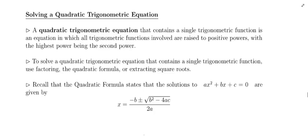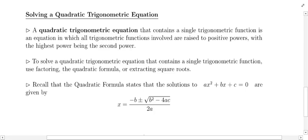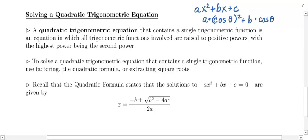You will see the highest power be the second power. When we don't work with trigonometric functions, we're used to something quadratic being ax² + bx + c. Now think of replacing the x with the cosine of theta — so it's going to be a number times the cosine of theta squared, plus a number times the cosine of theta, plus c.